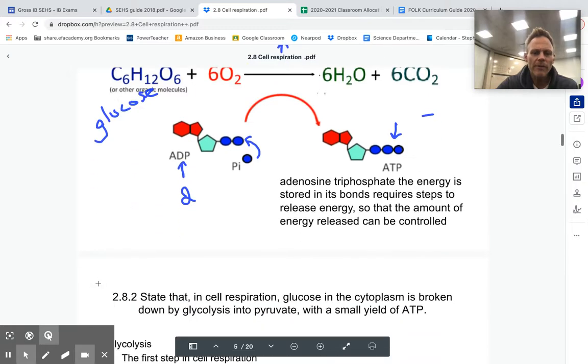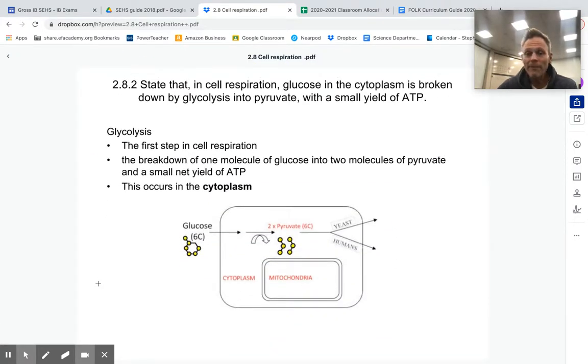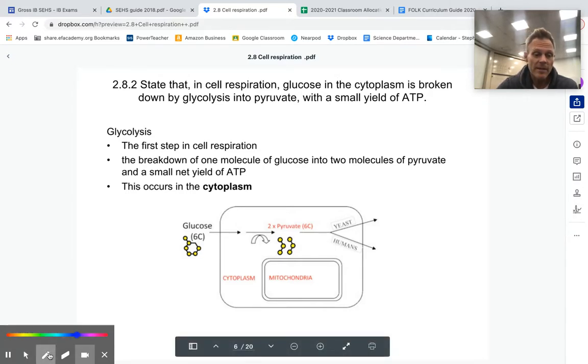Let's talk about the first step that needs to happen before we can begin our two types of respiration, and that is called glycolysis. State that in cell respiration, glucose first needs to be broken down in the cytoplasm by a process called glycolysis. Glyco means sugar. Lysis means break. So we're breaking our sugar. We break it into pyruvate, actually two molecules of pyruvate. And we make a small yield or a little amount of ATP.